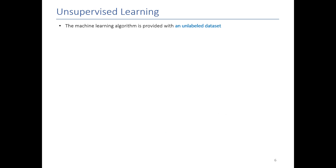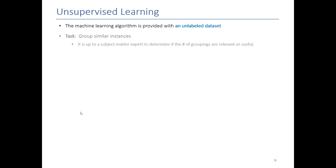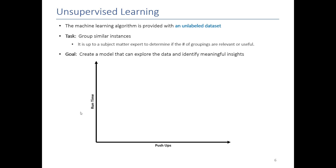When we talk about machine learning algorithms we can put them into two giant buckets. The first is unsupervised learning, which is useful when we have an unlabeled data set — if I only have the columns but not the result, I need to find patterns without labels. An unsupervised learning algorithm's job is to group instances based on their characteristics and try to find useful groupings. For example, I could take push-ups and runtime and graph them, and by eye I can see three natural clusters.